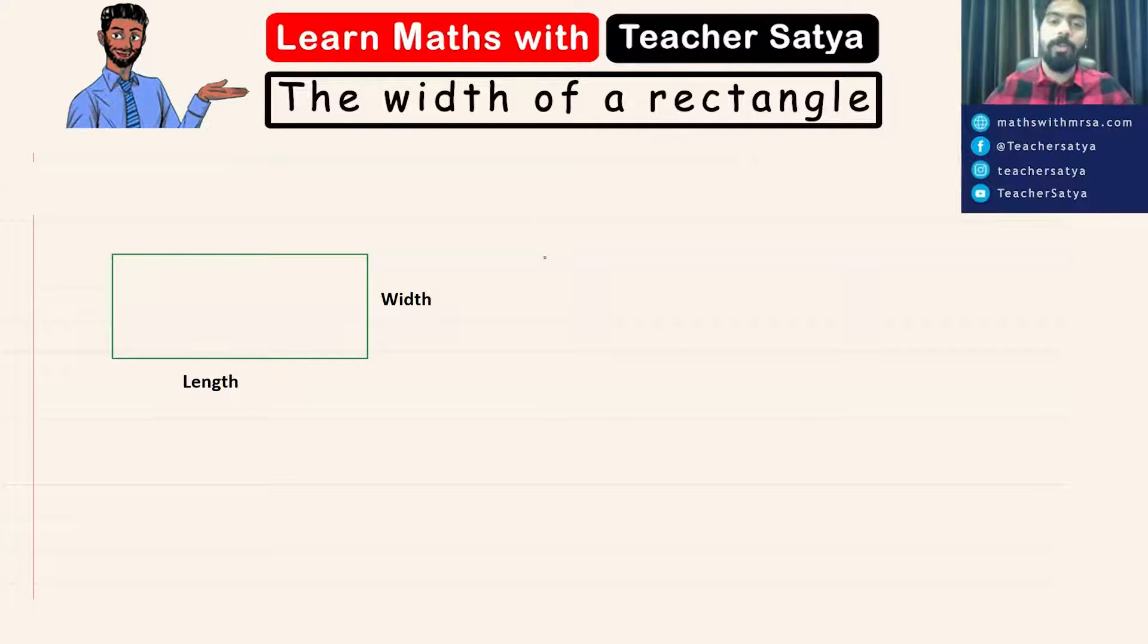Now first of all guys, let's find out a formula to find the width of a rectangle. In order to find the perimeter, P is 2L plus 2W.